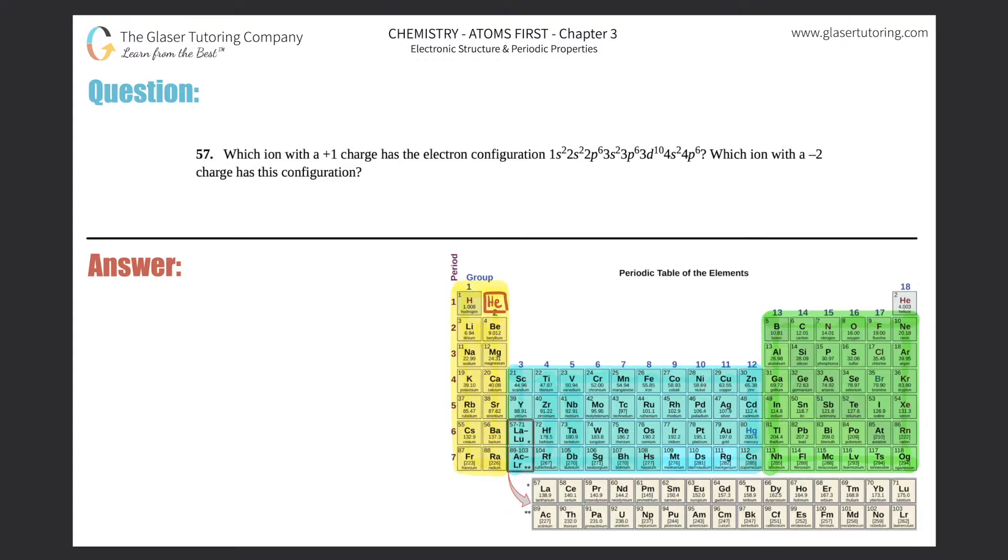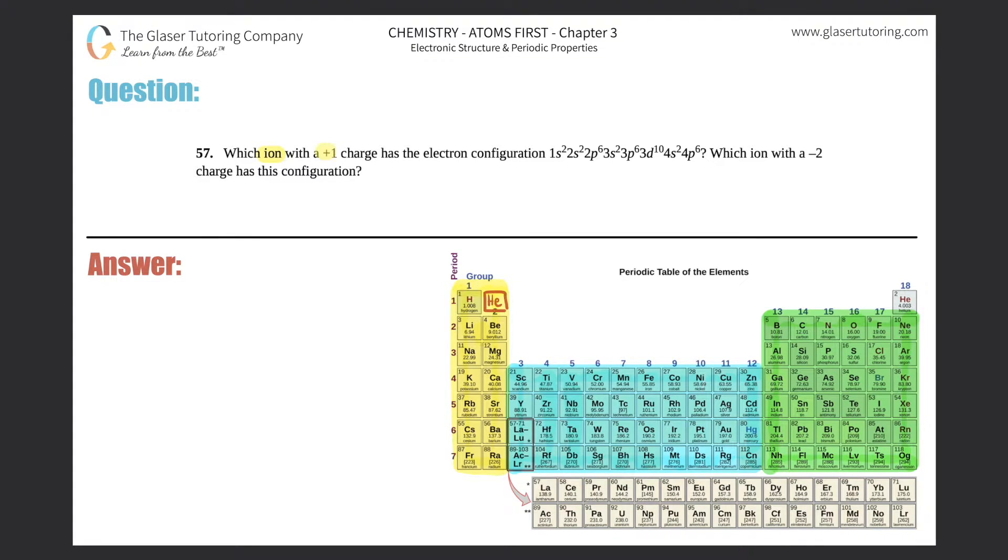Number 57: Which ion with the plus one charge has the electron configuration 1s2 2s2 2p6 3s2 3p6 3d10 4s2 4p6? Which ion with a negative two charge has this configuration? We're going to answer for the plus one charge and then for the minus two charge.